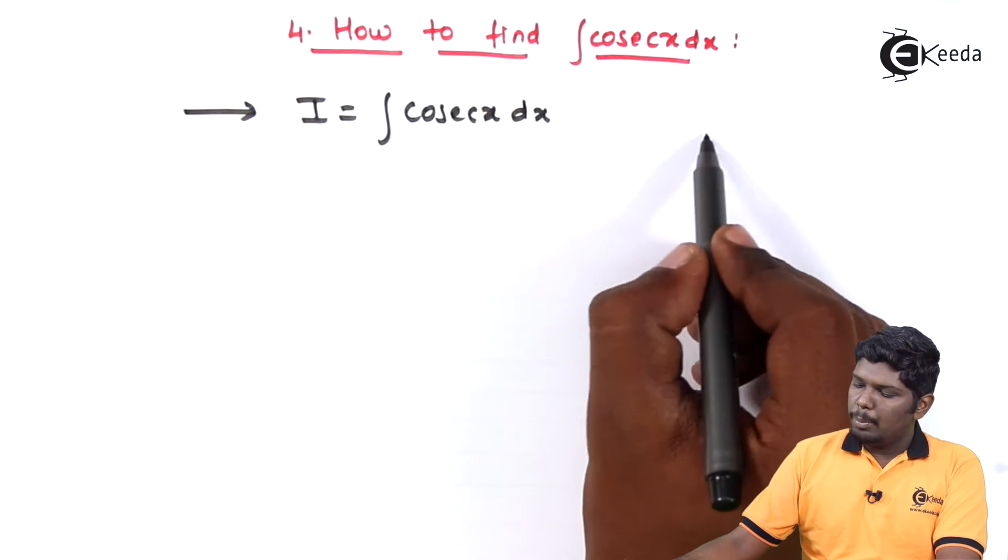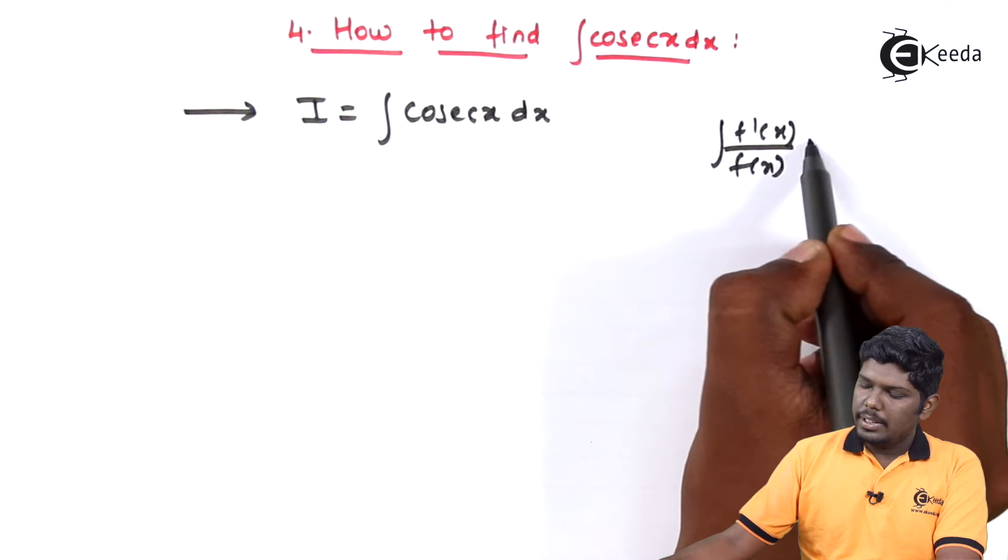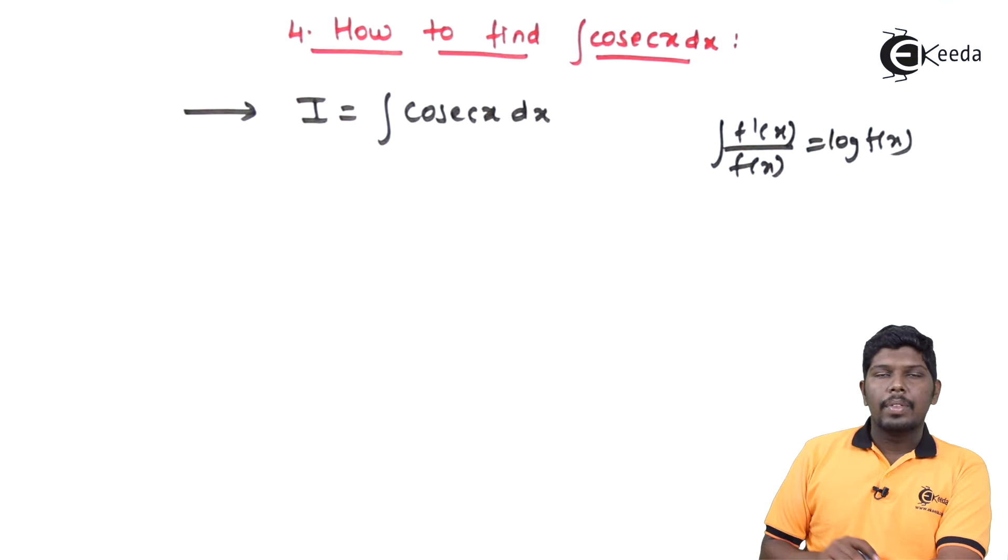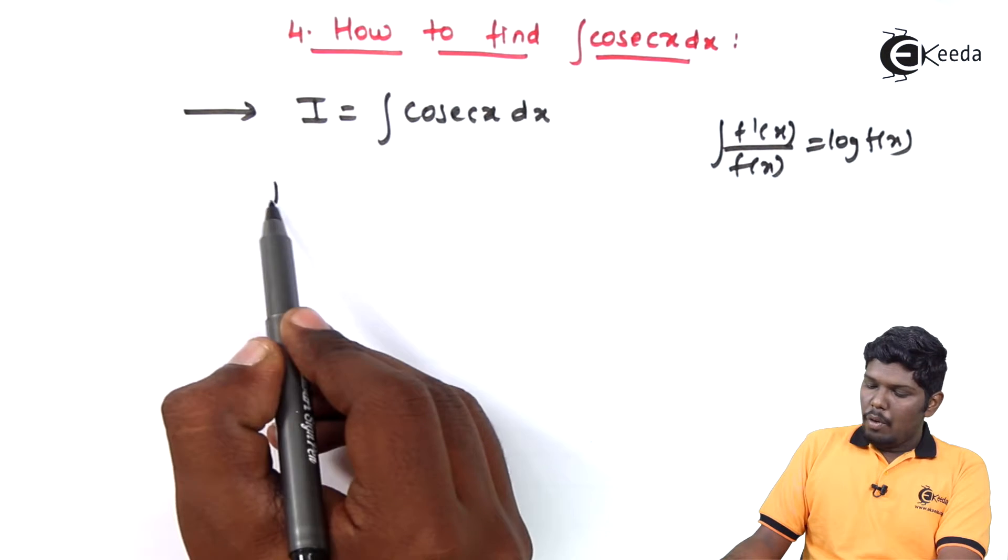That is, we have used the property integral f dash x upon f of x is log f of x. But here also, we don't have a denominator. For that,